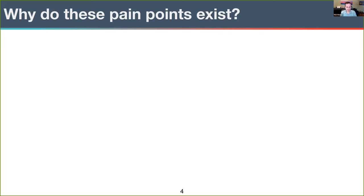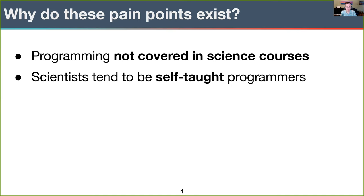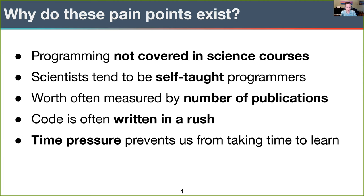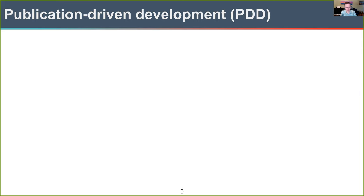So why do these pain points exist? These pain points exist for a number of reasons, including that programming and research software engineering are typically not covered in science coursework. My thesis was on computational plasma physics, but I never took a single class on how to program. Because of this, scientists tend to be self-taught as programmers. We often learn how to code on our own. My first semester in grad school, I had to learn how to code in FORTRAN without any help, really. Unfortunately, scientists are often judged by how many first author publications we've had. And because of that, we often write code in a rush so that we can get another paper out the door.